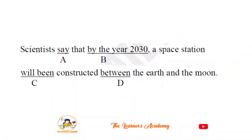Sentence: 'Scientists say that by the year 2030, a space station will have been constructed between the Earth and the Moon.' When 'by the year' or 'by the time' is used, we use the future perfect tense — 'will have.' Here, 'will have been constructed' is correctly used. This sentence is grammatically correct; the future perfect passive is appropriate here.